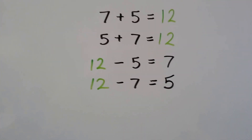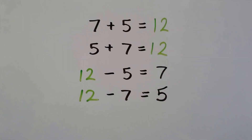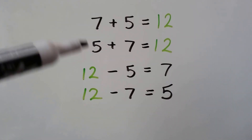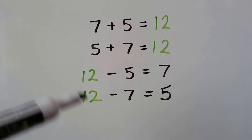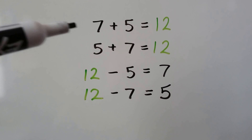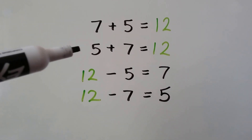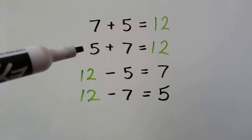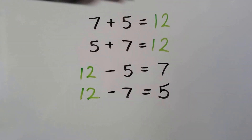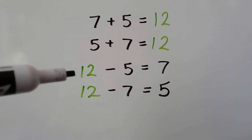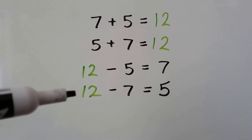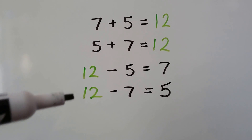Here's another fact family. We have 7, 5, and 12. We have 2 addition sentences and 2 subtraction sentences. 7 plus 5 equals 12. 5 plus 7 equals 12. And the sum 12 becomes the minuend: 12 minus 5 equals 7, and 12 minus 7 equals 5.